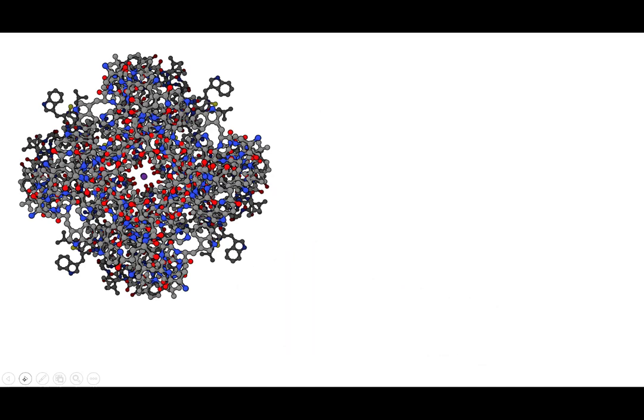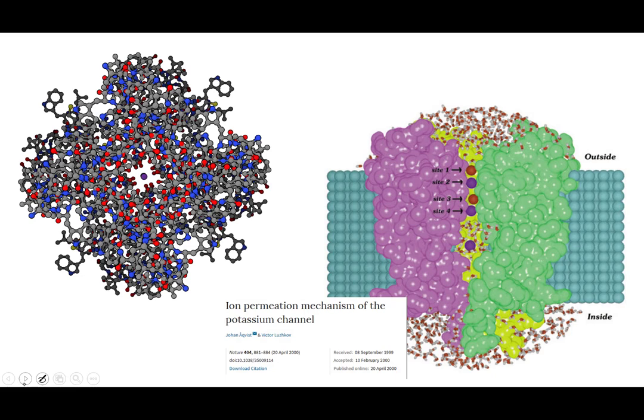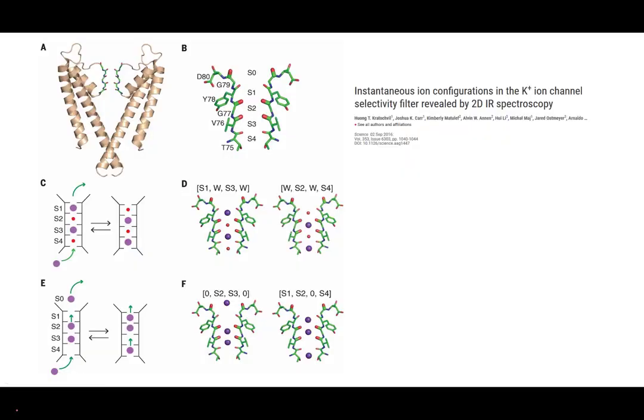For instance, the KCSA pore in bacteria transports potassium ions, but not sodium ions. The weird thing is, potassium ions are bigger than sodium ions, so it's not just acting like a sieve. The mechanism has been the subject of a lot of research over the last 20 years, and it still isn't 100% certain.